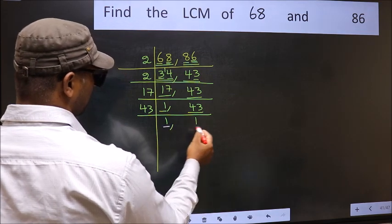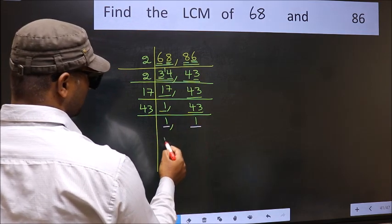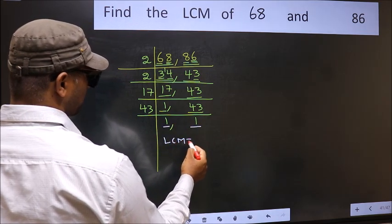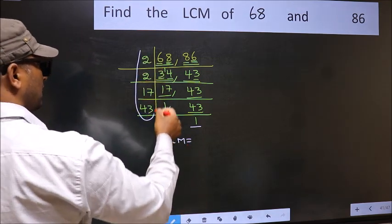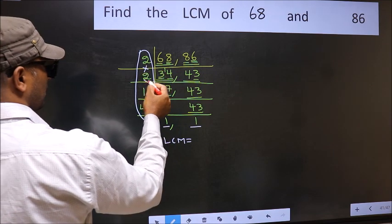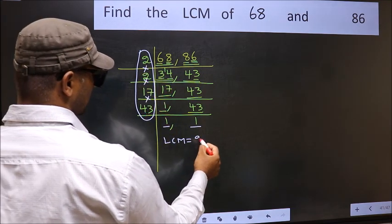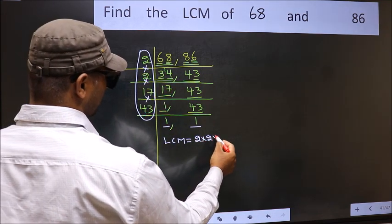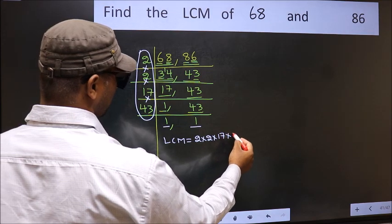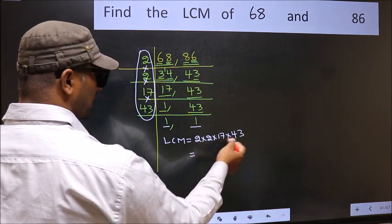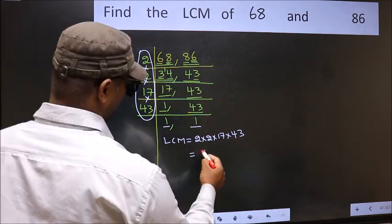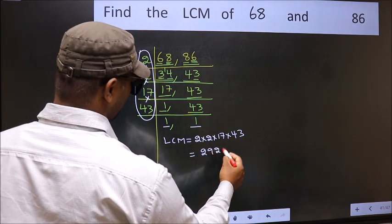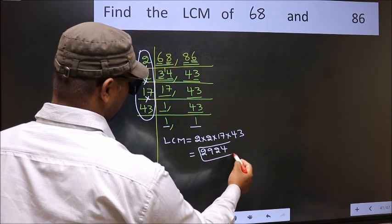We got 1 in both places. So our LCM is the product of these numbers: 2 times 2 times 17 times 43. When we multiply these numbers, we get 2924 as our LCM.